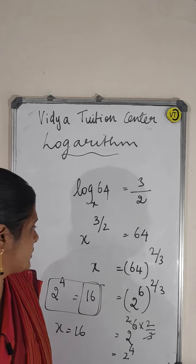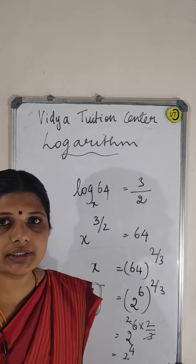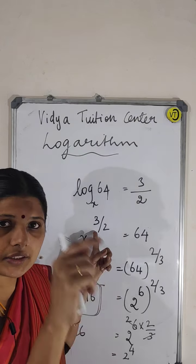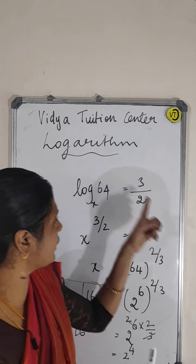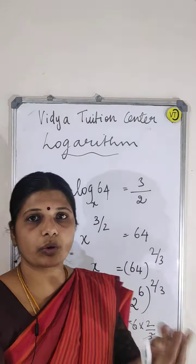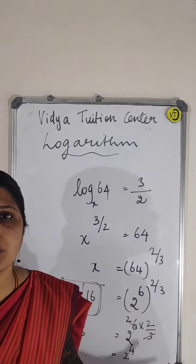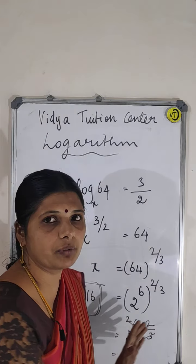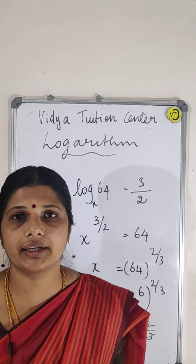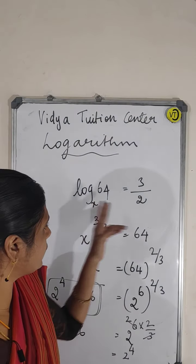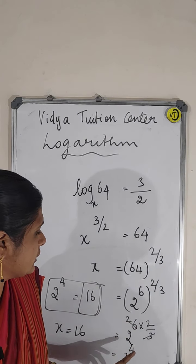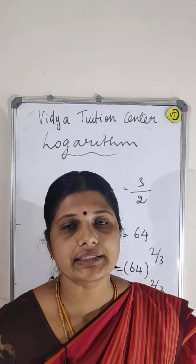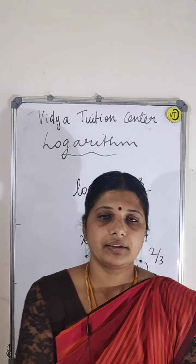The key concept here: when the power is in fractional form and moves to the other side, it goes reciprocally. Some proofs are there which I will do later. So 3 by 2 becomes 2 by 3, and with 2 to the power of 6 and 2 by 3, you get 2 to the power of 4, which is 16. That is your value of x. Thank you, guys.